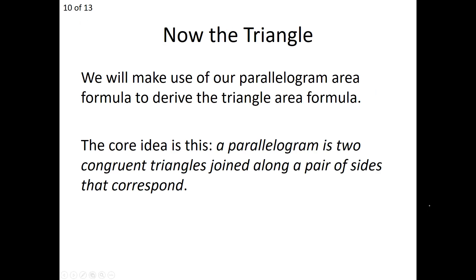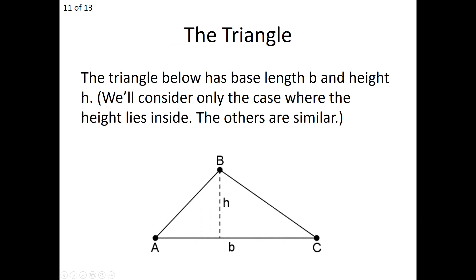Now what we want to do is move toward the triangle. To give you an idea of strategy, think of a parallelogram — which we just determined has area base times height. A parallelogram is really two congruent triangles joined along a pair of corresponding sides. When we draw a diagonal within a parallelogram, that diagonal cuts it into two congruent triangles. By the area congruence postulate, the area of both triangles must be equal, so we're going to use the parallelogram area formula to derive the triangle area formula.